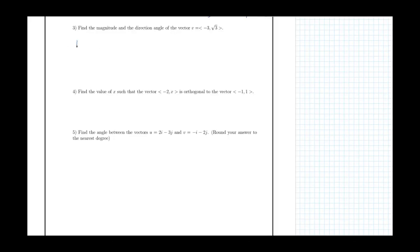In the third question, we find the magnitude and direction angle of vector v with components (-3, √3). The magnitude of v equals √(x² + y²) = √((-3)² + (√3)²) = √(9 + 3) = √12.